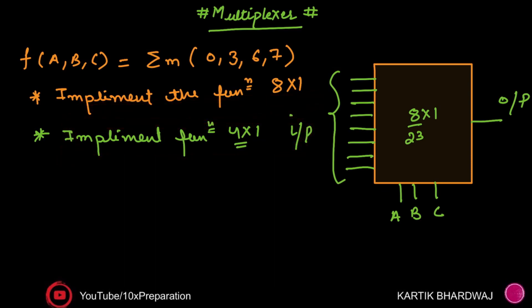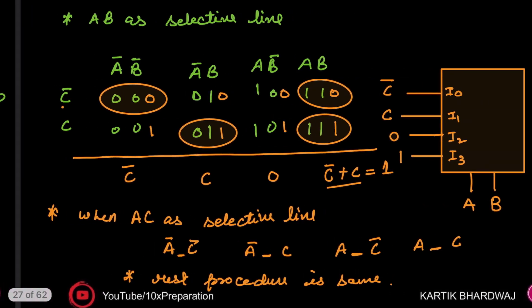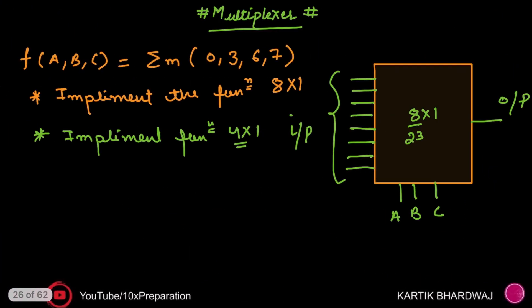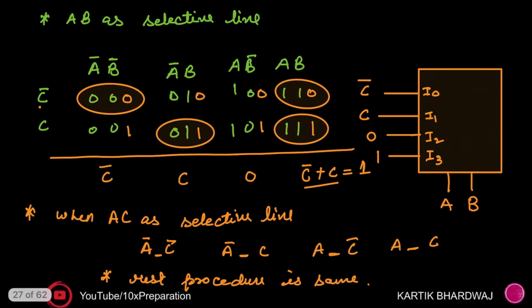Now the question is how to implement this using a 4×1 MUX. This technique is very important for various exams. We have three variables, and you need to understand the priority or weight of each variable. Variable A has the highest weight (2^2), B is next (2^1), and C has the lowest weight (2^0).